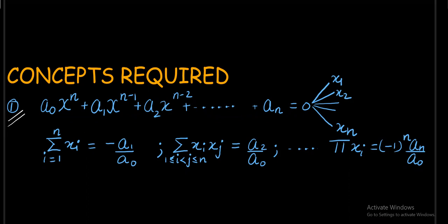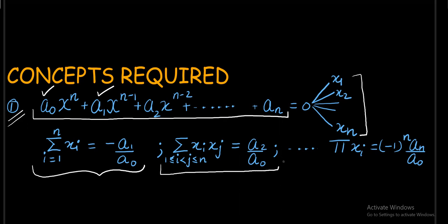I expect viewers to know this concept which says that suppose you have a polynomial equation of degree n, having n roots which can be real or imaginary, then sum of the roots taken one at a time can be written as minus a_1 upon a_0. Similarly sum of the roots taken two at a time can be written as a_2 upon a_0. You can also notice the sign in front of a_1 upon a_0, a_2 upon a_0, and so on.